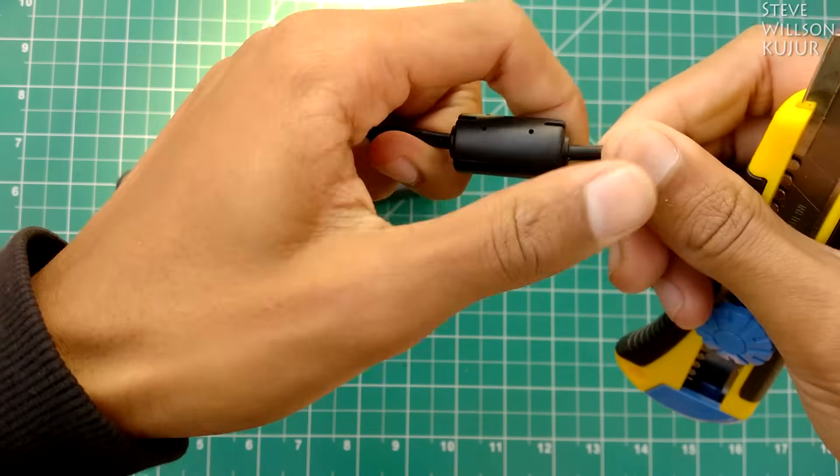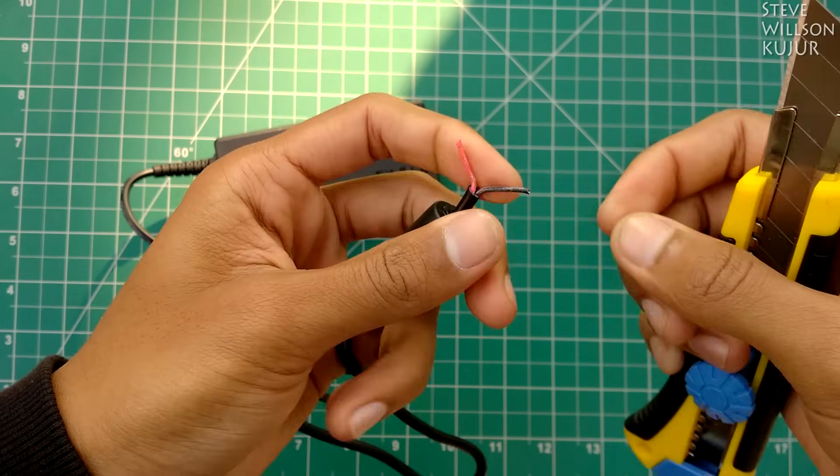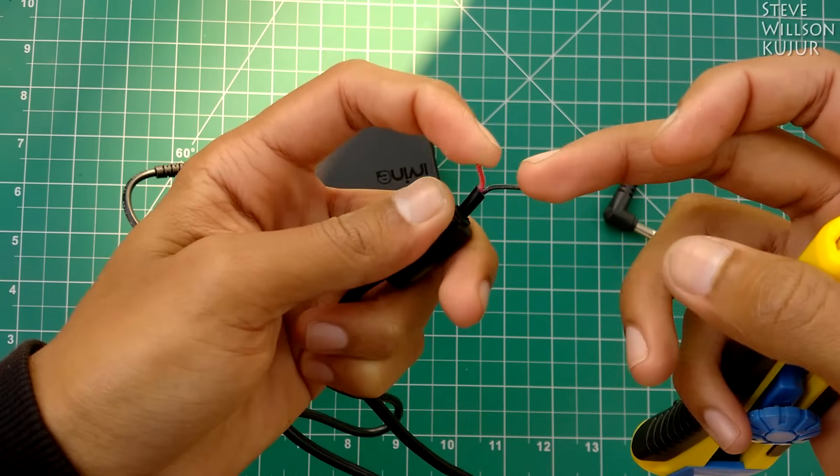Now two wires are exposed: the black one is negative and the red one is positive.